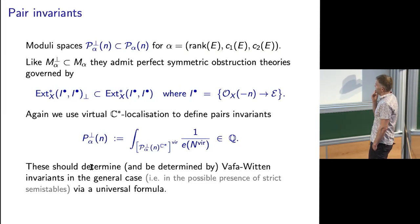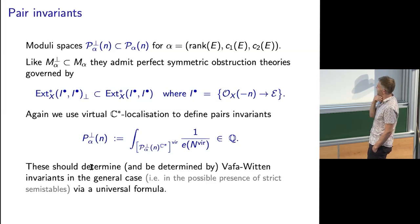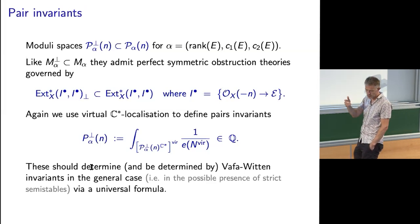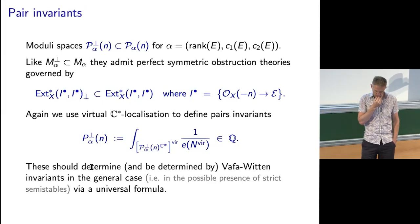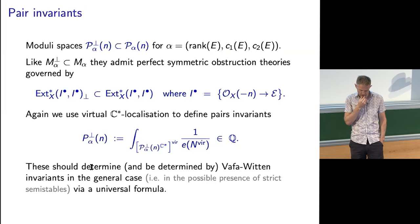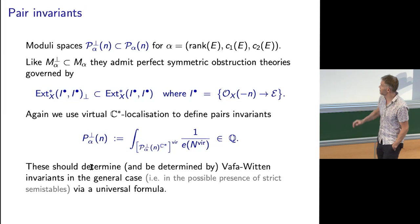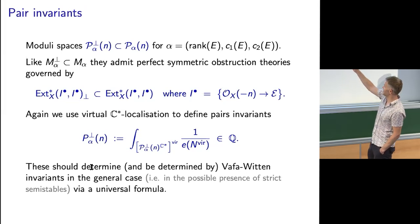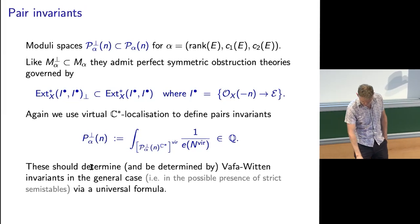These invariants obviously depend on N, but the idea is they depend on N in some universal way that is governed by certain underlying invariants which we call the Vafa-Witten invariants. So we need a universal formula expressing these in terms of Vafa-Witten invariants.